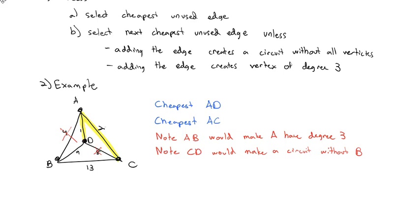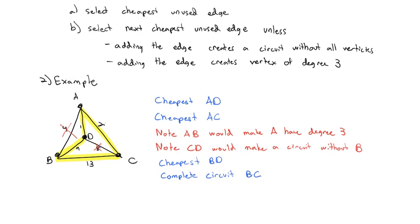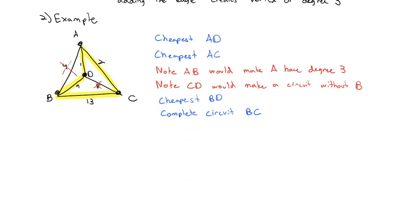Which means now our cheapest option is B, D. And we can complete the circuit with the only remaining line, B, C. And we have our sorted edges circuit completed, which may not be the most efficient, but at least it's better than brute force. And I can pick any letter to start at. Let's just start at A because it's first alphabetically. And we can go either direction. I'm going to go to the right. So A, C, B, D, and back to A.